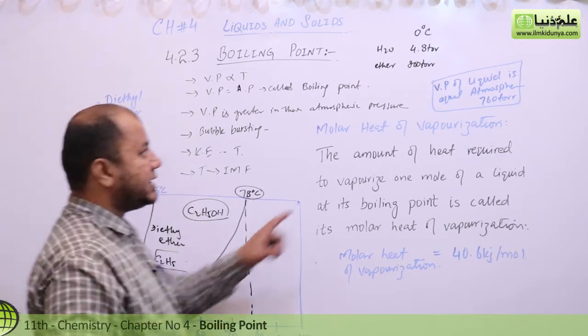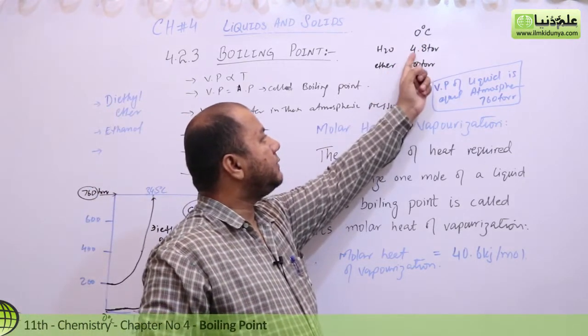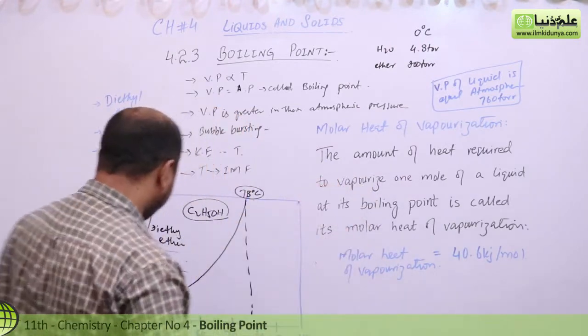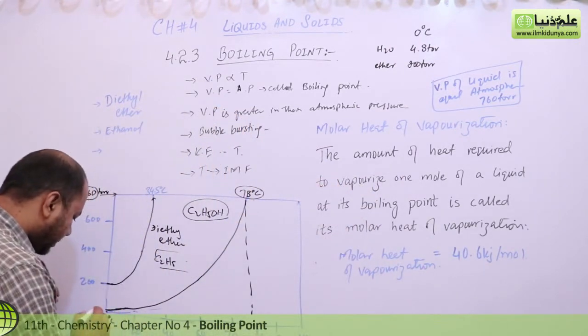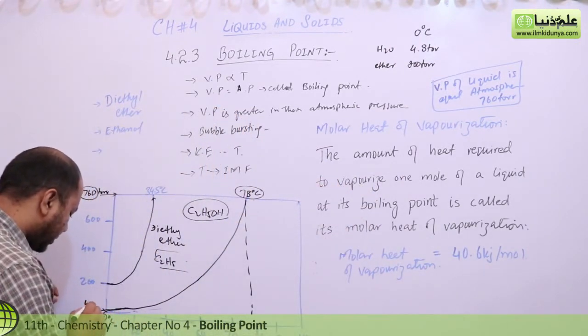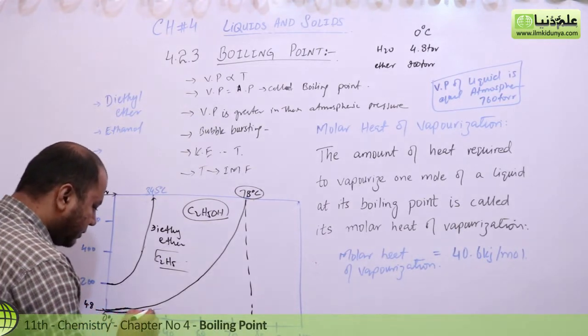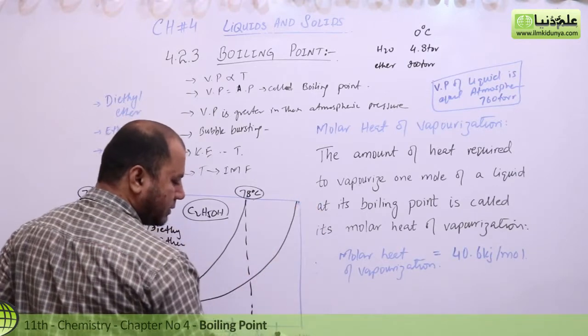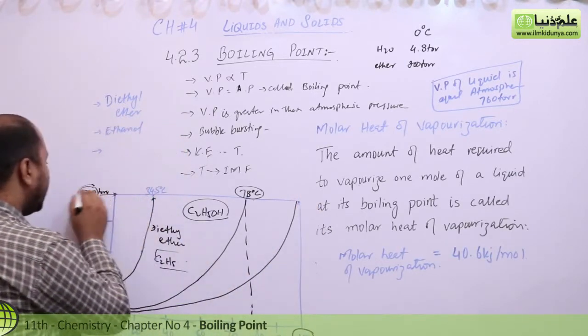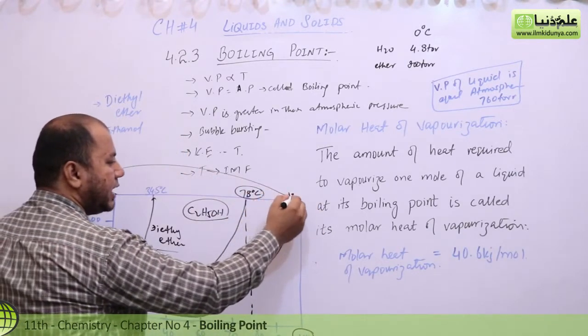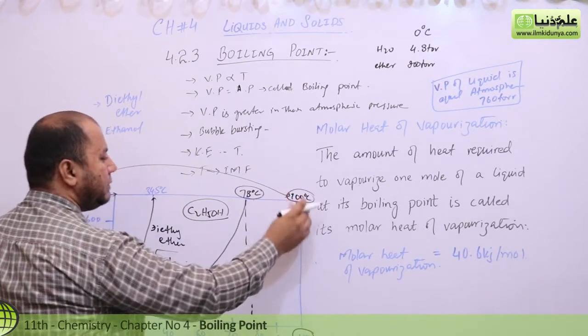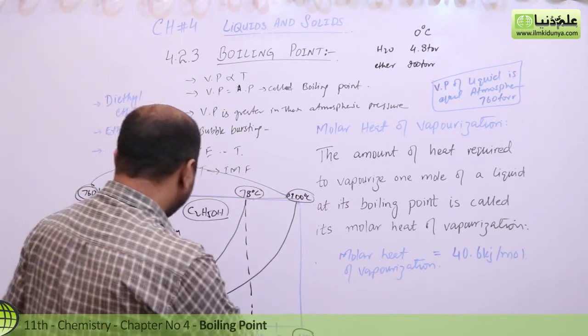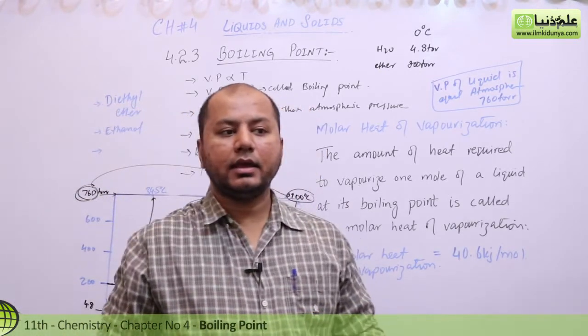Water, you can say that at 0 degrees is 4.8 torr pressure. Water at 0 degrees is 4.8 torr pressure, and at 100 degrees it becomes 760 torr pressure. This graph shows you a sequence.